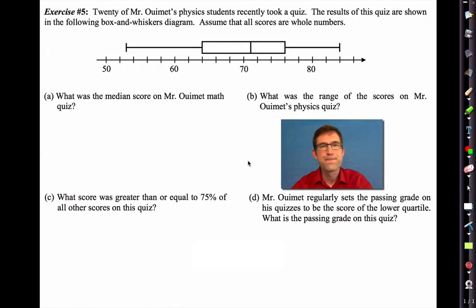Let's keep going. Now, in exercise five, they've created my box and whiskers diagram for me, my box plot for me. So 20 of Mr. WeMet's physics students recently took a quiz. The results of this quiz are shown in the following box and whiskers diagram. Assume that all scores are whole numbers. All right. So how about this? See if you understand a little bit about this at this point. Pause the video and see how many of these questions you can answer, and then we'll go through them all one by one.